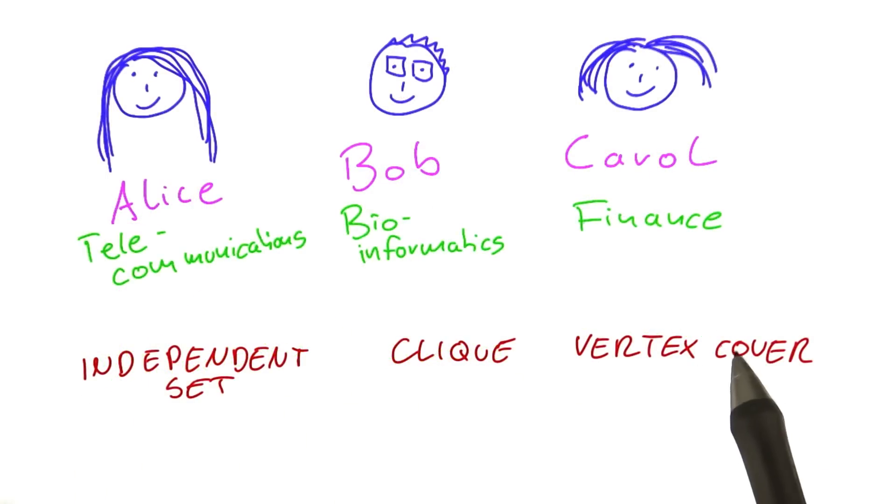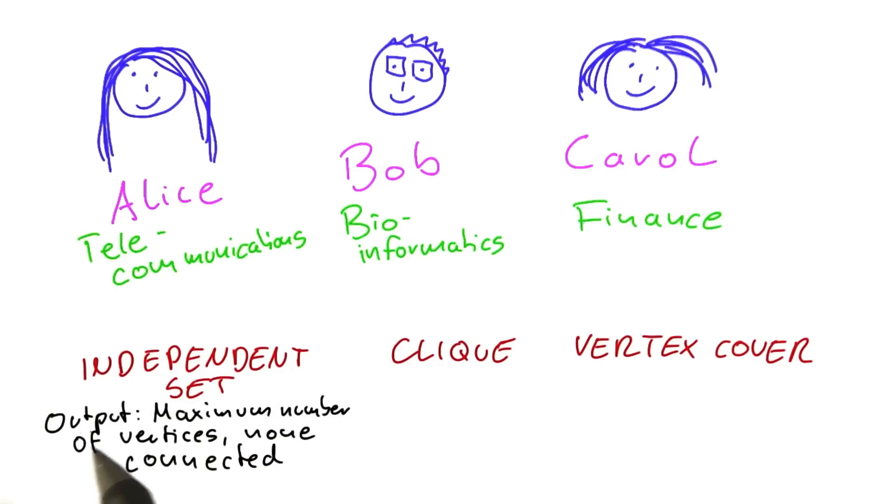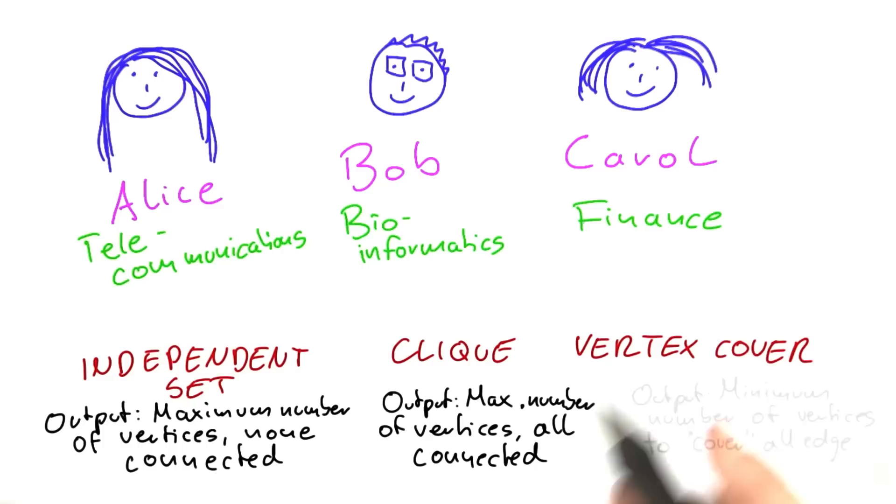And all of those three problems took as input a graph with n vertices. For independent set, you were looking for the maximum number of vertices where none of those vertices you have selected are connected to each other. For clique, you were looking for a maximum number of vertices where all of them are connected.